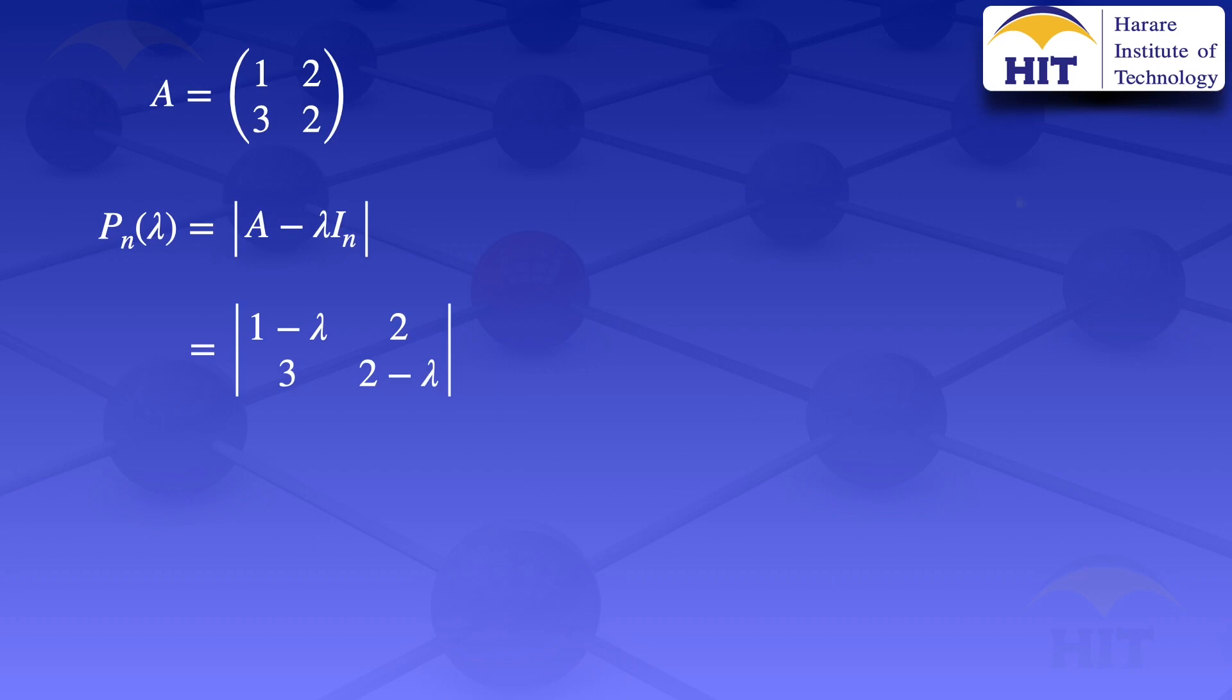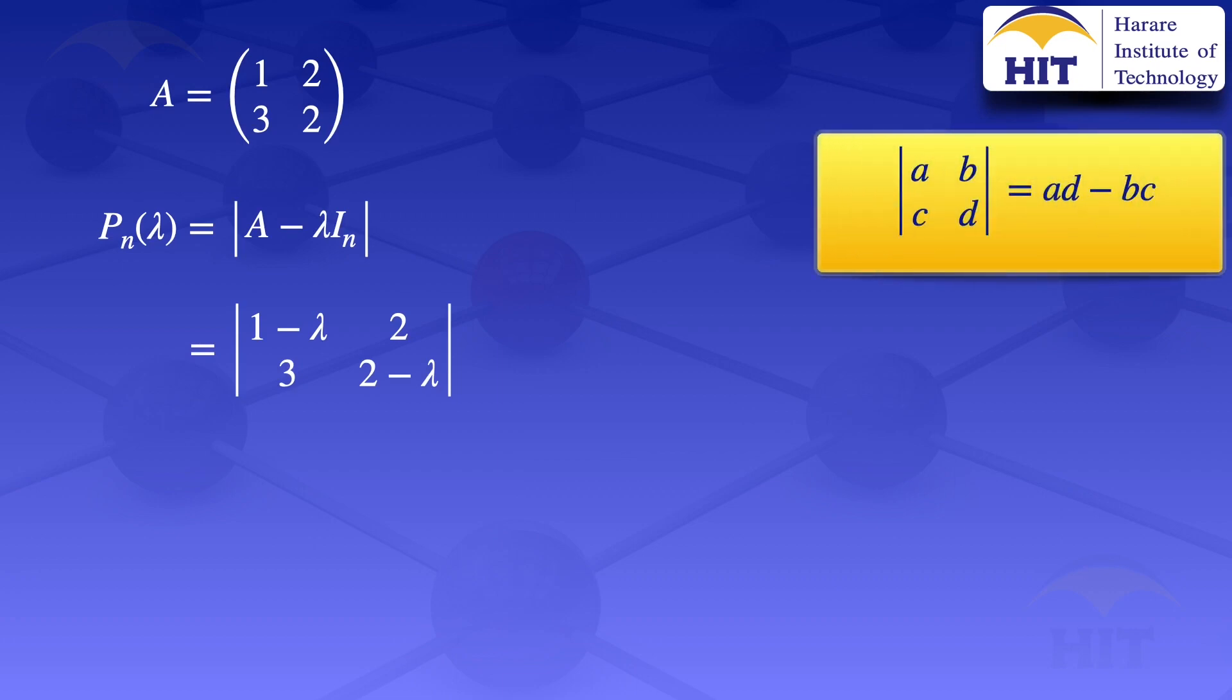If you recall, the determinant of a 2 by 2 matrix A, B, C, D is given by AD minus BC. If we use that formula for finding the determinant of a 2 by 2 matrix, we get that our characteristic polynomial is 1 minus lambda multiplied by 2 minus lambda minus 6, because we would multiply the 2 by 3 and you would get 6. That's why you have a minus 6 at the end.